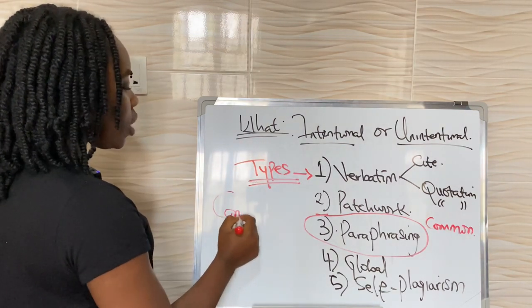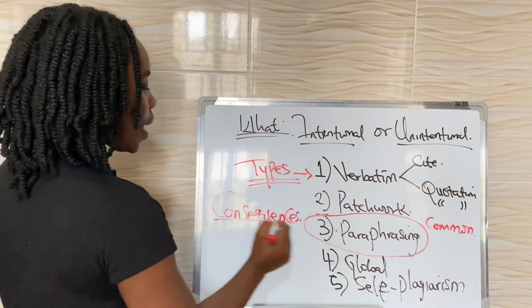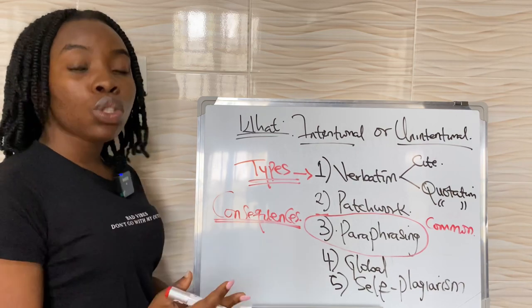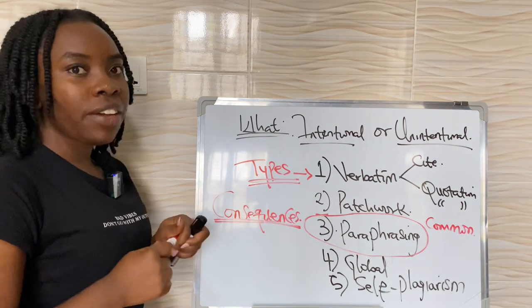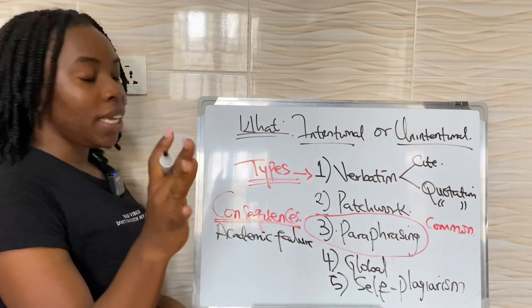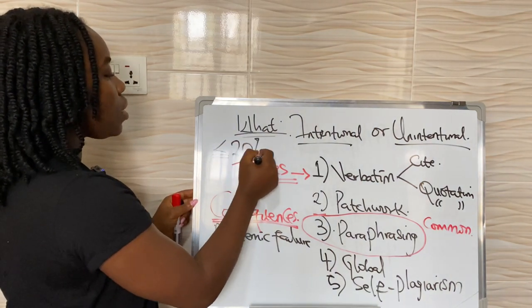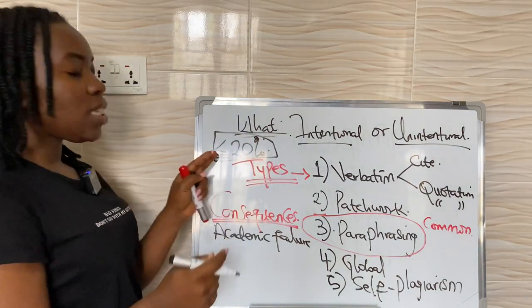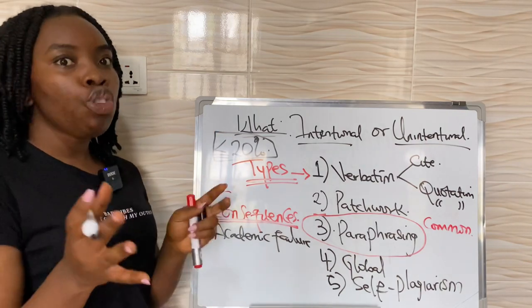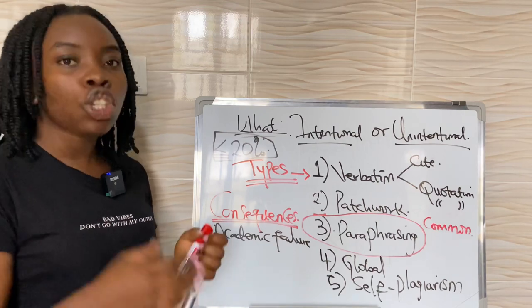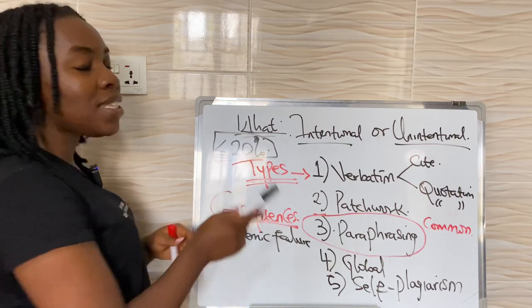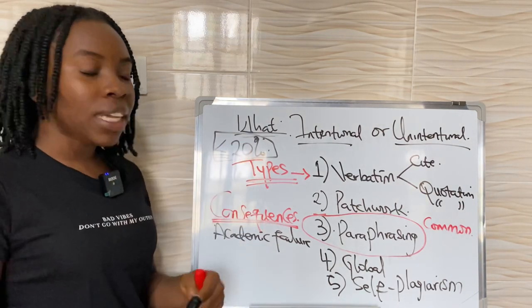Now let's look at the consequences of plagiarism. Studying in the UK or any educational facility, plagiarism is highly frowned upon because you're not giving someone credit for something they've researched and worked so hard to put together. One consequence is academic failure — where you fail a course because your plagiarism score was too high. Ideally, your plagiarism score should be less than or equal to 20% similarity. If it's more than 20%, you want to bring it down, though this can vary by course — so ask your tutors what the safe zone is.